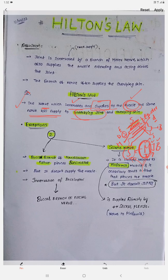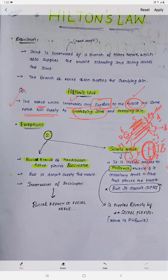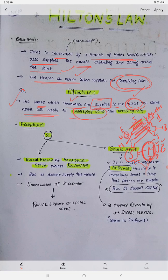This law is called Hilton's Law. We can see it another way also: the joint is innervated by the branch of the motor nerve that also supplies the muscle acting across the joint, and the branch of the nerve often supplies the overlying skin and underlying joint.